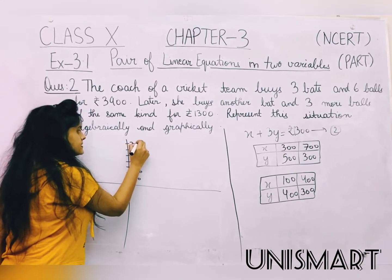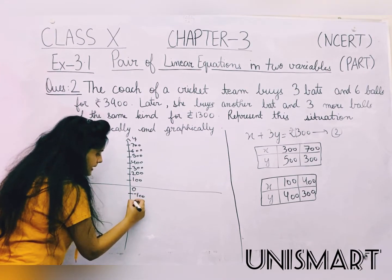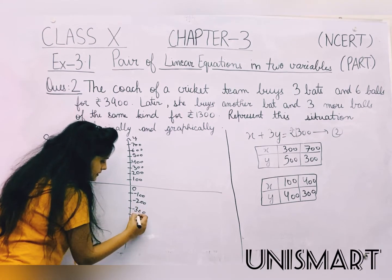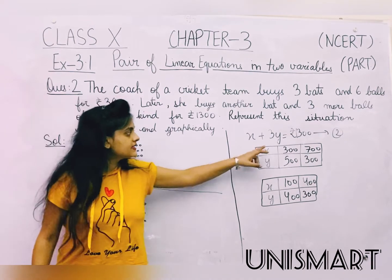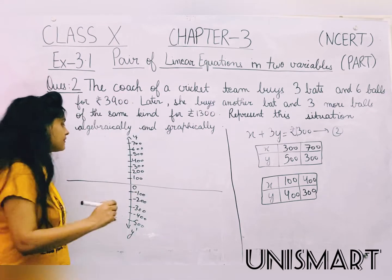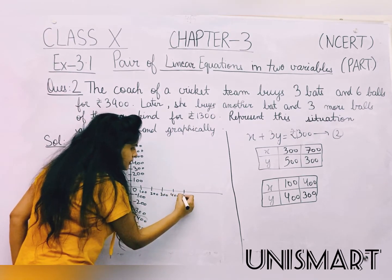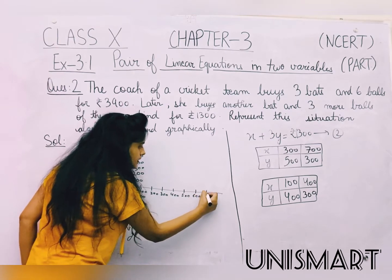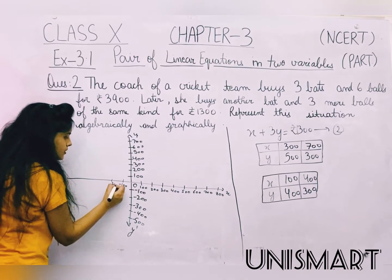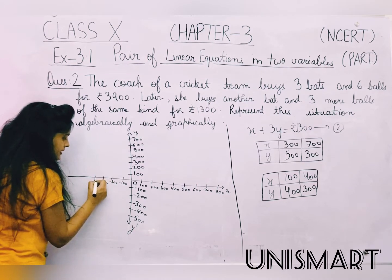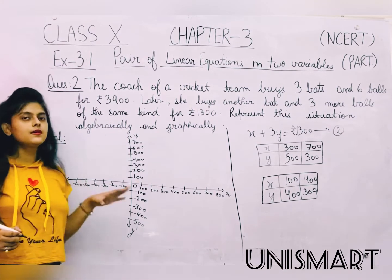Continuing the Y-axis: 600, 700. Now we need to take X up to 700, as the bigger value is 700. So on the X-axis we mark: 100, 200, 300, 400, 500, 600, 700, 800. This is our X-axis. On the negative side we take: minus 100, minus 200, minus 300, minus 400, minus 500, minus 600. This is our X-dash.